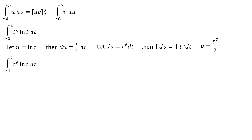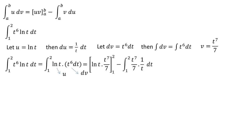The integral of t to the power of 6 times ln(t) dt from 1 to 2 equals the integral of ln(t) times t to the power of 6 dt from 1 to 2. Identifying u and dv, this equals ln(t) times t to the power of 7 over 7 from 1 to 2, minus the integral of t to the power of 7 over 7 times 1 over t dt from 1 to 2.